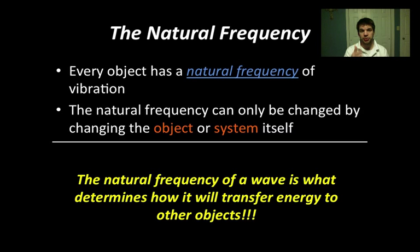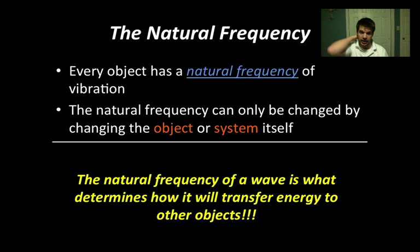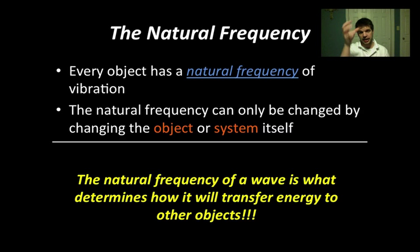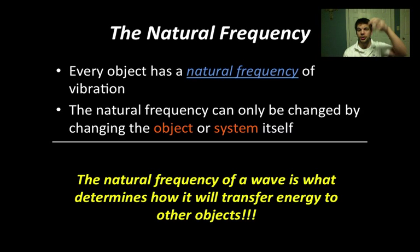We talked about natural frequency. Every object, every material has this thing called a natural frequency of vibration — that is the frequency that the particles in that material tend to vibrate at. The natural frequency can only be changed if you change the object or system itself. The example we did in class was a ball attached to a slinky: we could change the amplitude, but the frequency stayed the same. To change the natural frequency, I made the slinky longer, changing the system itself.